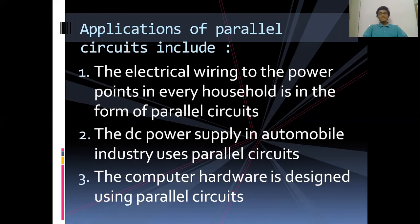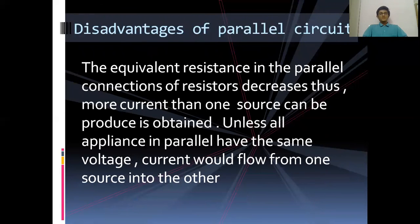There are also disadvantages of parallel circuits. The equivalent resistance in the parallel connections of resistors decreases, thus more current than one source can produce is obtained. Unless all appliances in parallel have the same voltage, current would flow from one source into the other, which would reduce power.